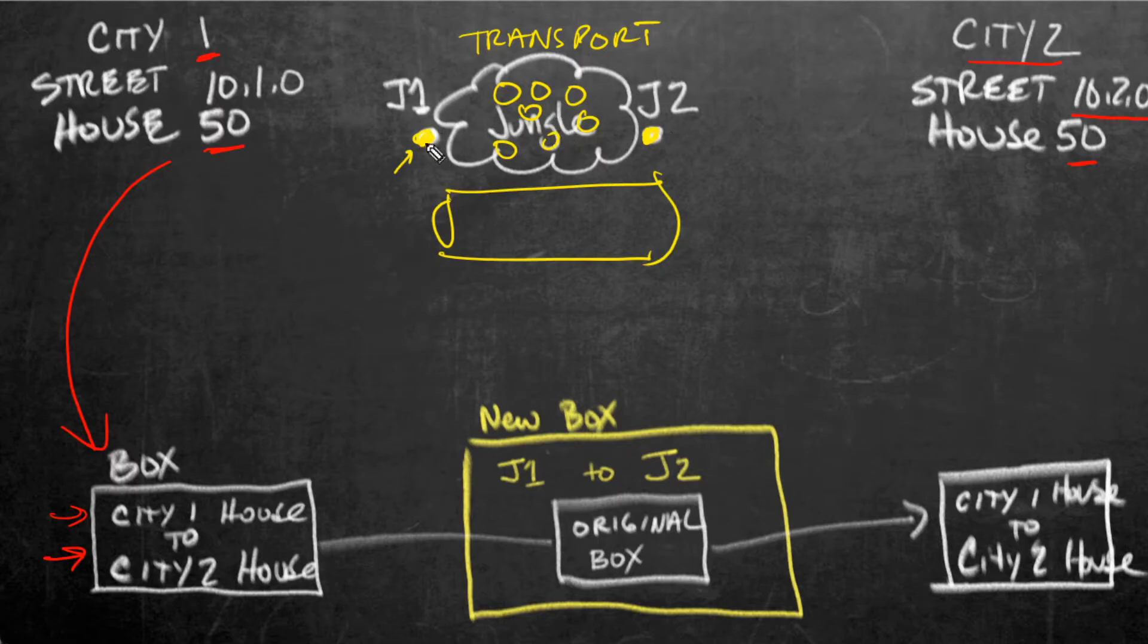So they use a new box and they simply take the old box with all of its original information and they put it into a bigger box. And that bigger box, the outside label says, source is J1, needs to go to J2. And then all these devices and stop points along the way are going to help in forwarding that box over to J2.